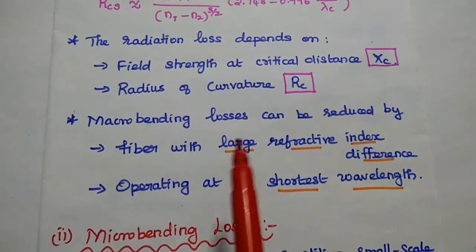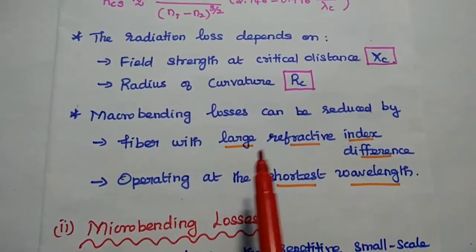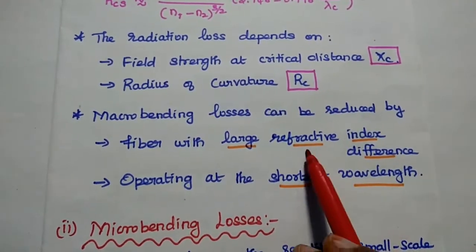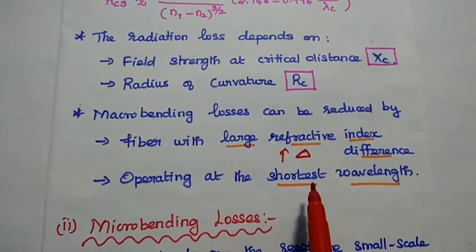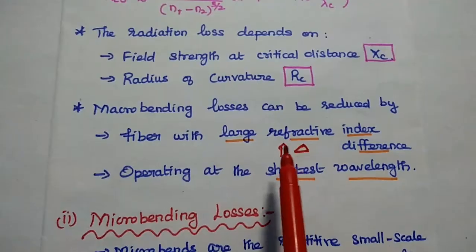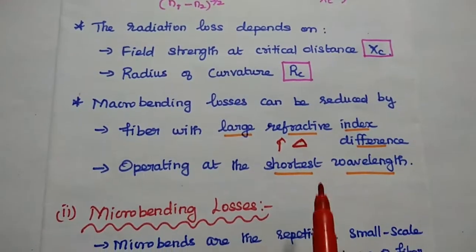Macro bending losses can be reduced either by using fiber with large refractive index difference that is del value or operating at the shortest wavelength. These two are the methods to minimize the macro bending losses.